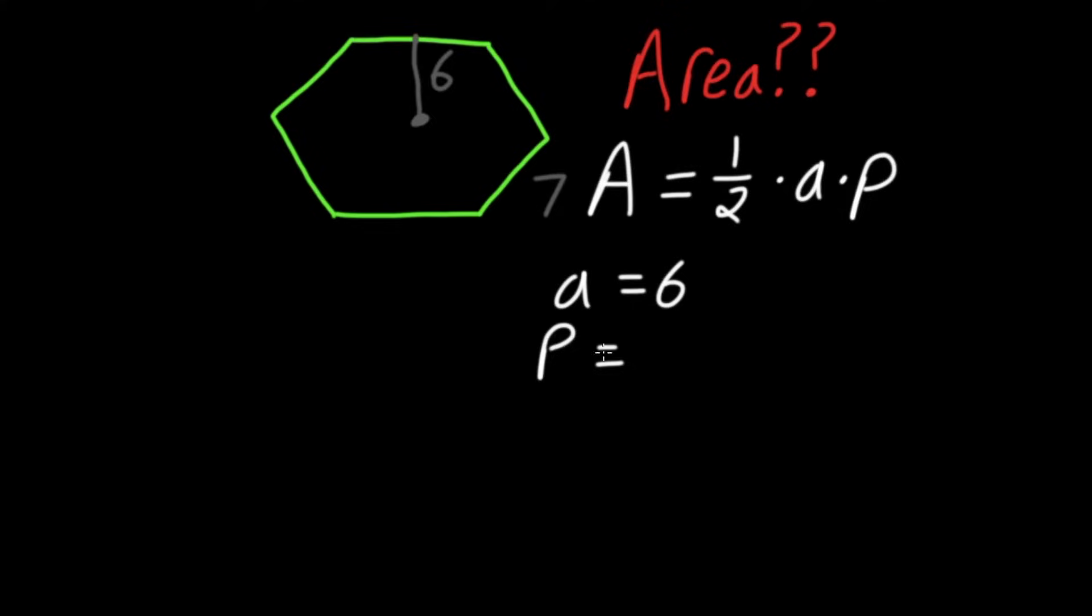P is your perimeter. Perimeter is the distance all the way around your shape. Our side length is seven, and this is a regular hexagon, meaning that all of our sides are exactly the same.